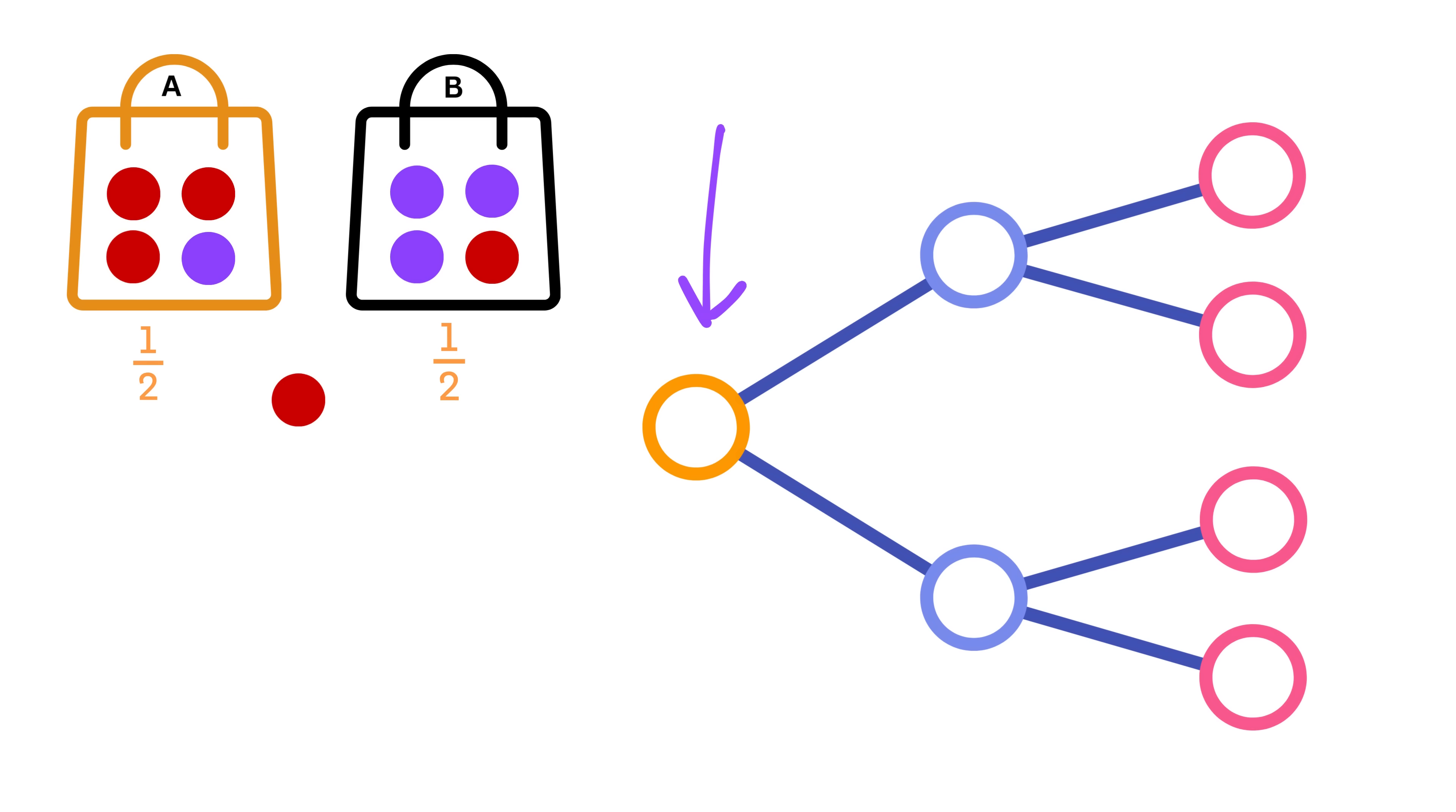Draw a small circle representing the root of the tree, and then two branches to the right, like this. At the first branching point, label the top branch, bag A with probability 1/2, and the bottom branch, bag B, with probability 1/2, like this, because initially, both of them are equally likely to be chosen.